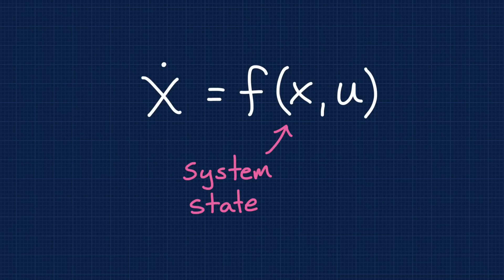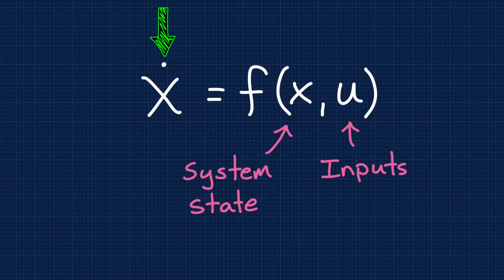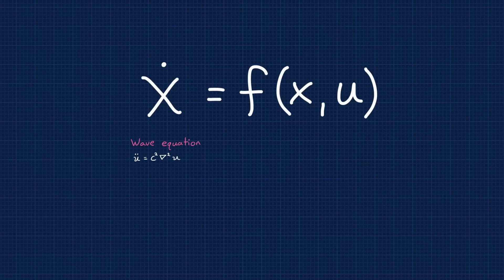If we call X the state of the system and U the external inputs into the system, then this is saying that how the system state changes over time is a function of the current state and external inputs. And with this framework, it was off to the races, creating mathematical models of dynamic systems.